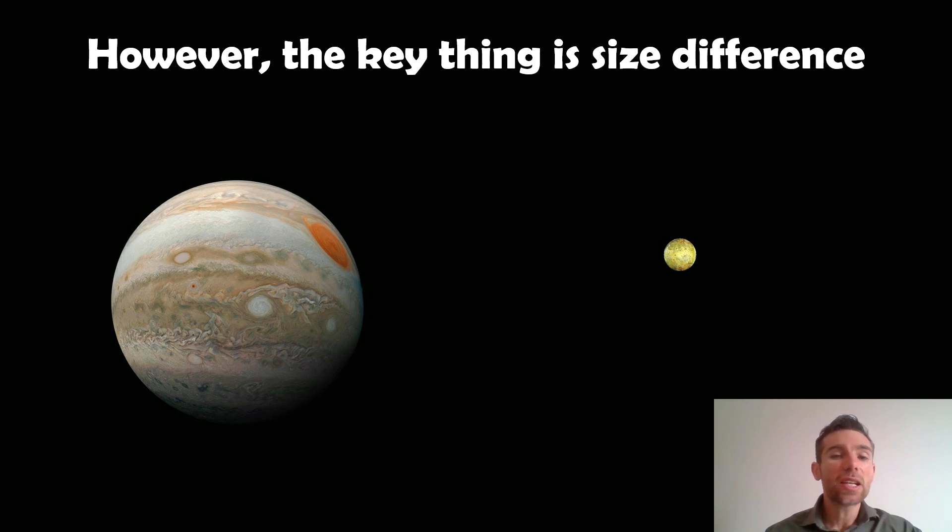However, the key difference really is their size difference. So here you've got Jupiter and Io, one of its inner Galilean moons. And compared to Jupiter, it's small. I mean, it's not a small moon. It's quite big. But in comparison to the planet, it's much, much smaller. So here, key difference is size between the two.